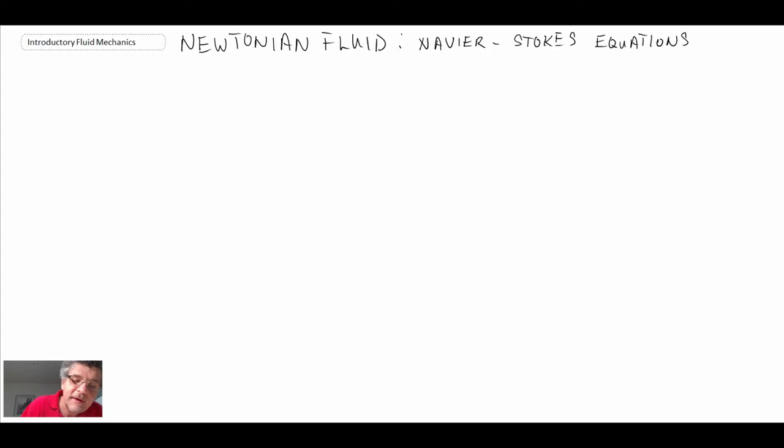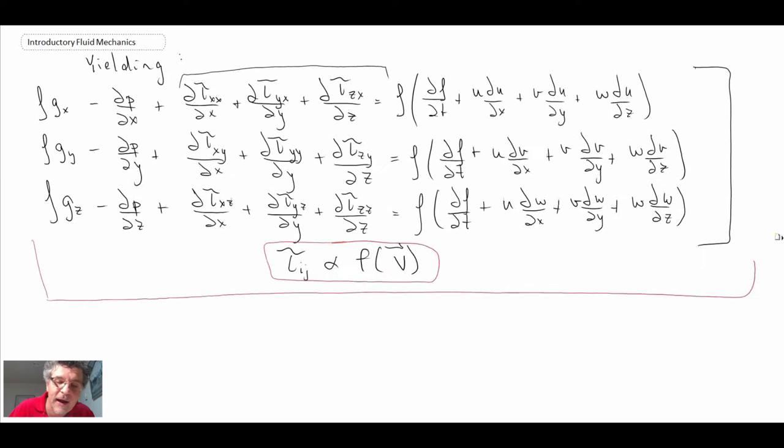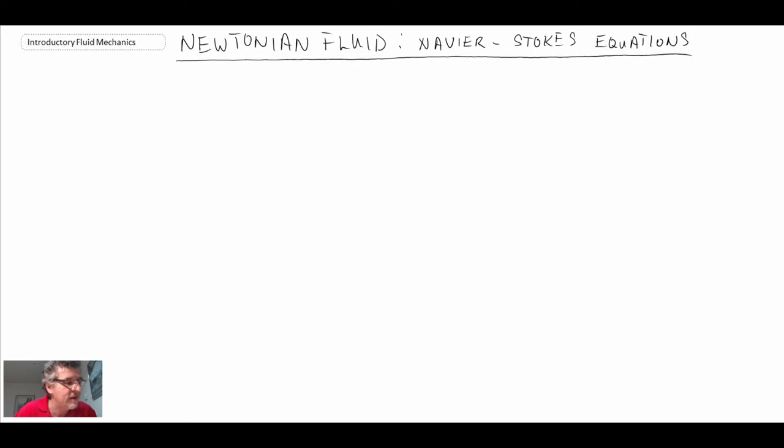If you look back to the last segment, we had this equation here, basically taking continuity or linear momentum and applying it to a differential element. We were fine with the body forces, pressures, and the right-hand side inertia term, but it's the term with the shear stresses in it, which is right in the middle here, that we need to deal with. In order to deal with that, we need to make an assumption about the fluid.